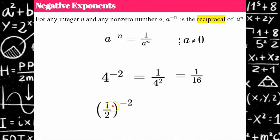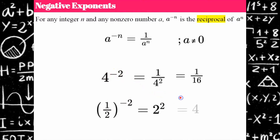If we look at one half to the negative two, we take the reciprocal of our base and change the exponent to be positive. The reciprocal of one half is two, so we change the exponent to positive two — reciprocal, positive — and two squared is four. You flip the base and square. I could also put one fourth in parentheses and square that: one squared is one, four squared is 16, so one over 16. Either way, it's equivalent — the reciprocal of the base and then the positive exponent.